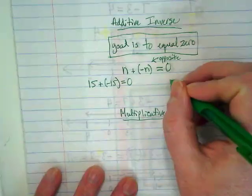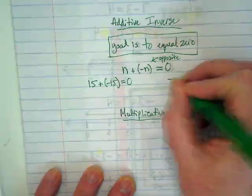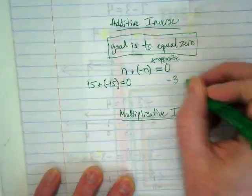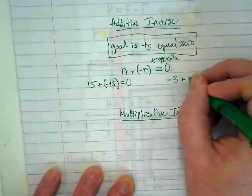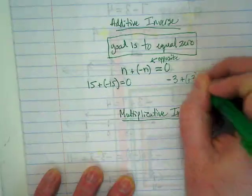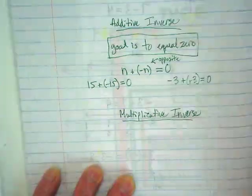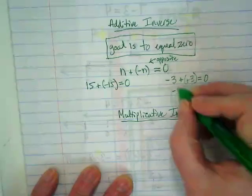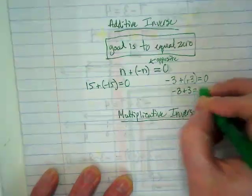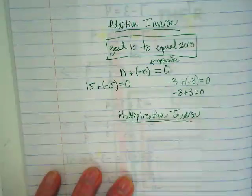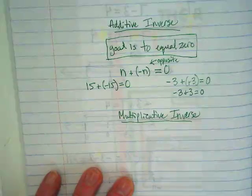This also works if the first number is a negative. If I have negative 3, I would add to it its opposite, which is positive 3. I would not normally write it like that. I would normally just do this. They mean the same thing. I'm just showing the invisible plus with the first one.